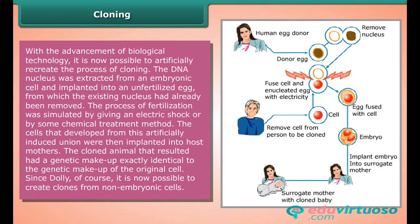The cells that developed from this artificially induced union were then implanted into host mothers. The cloned animal that resulted had a genetic makeup exactly identical to the original cell. Since Dolly, it is now possible to create clones from non-embryonic cells as well.